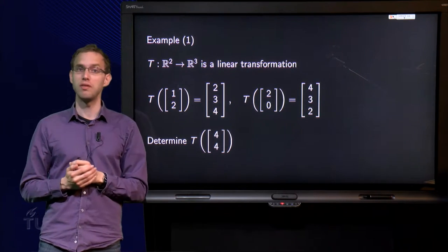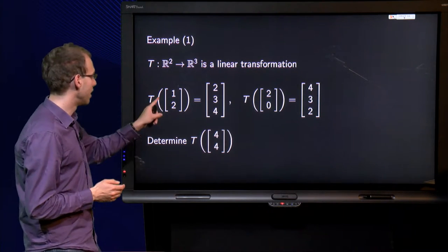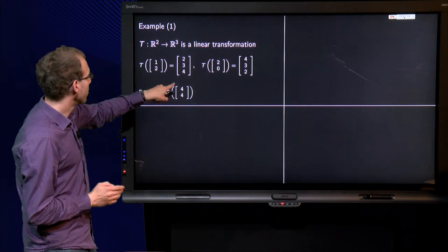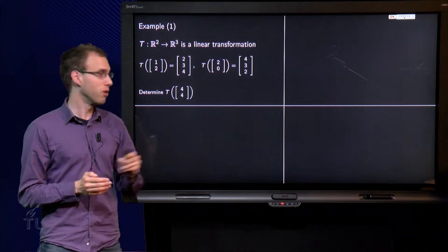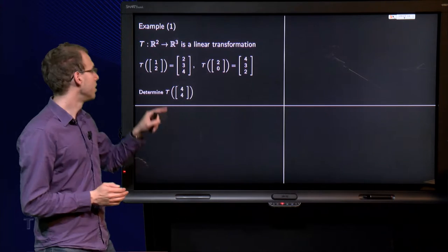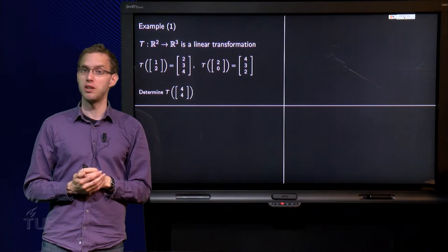First of all, we observe that we can write (4,4) as a linear combination of (1,2) and (2,0). Because if I want to get the (4,4), if I want to get the second 4, well, this (2,0) won't help me much. So I will have to take twice (1,2).